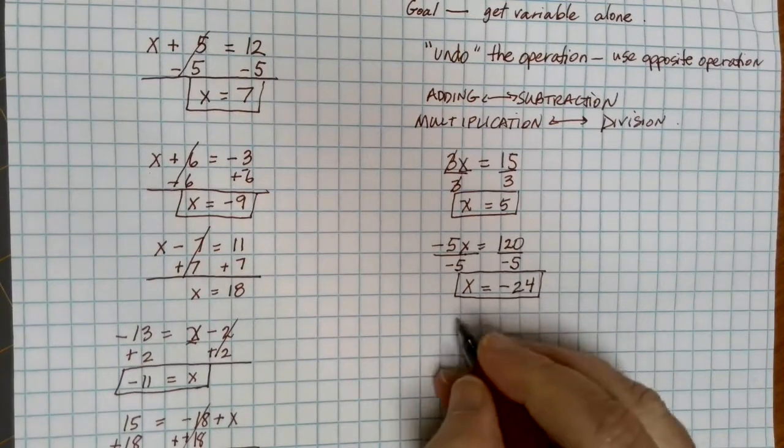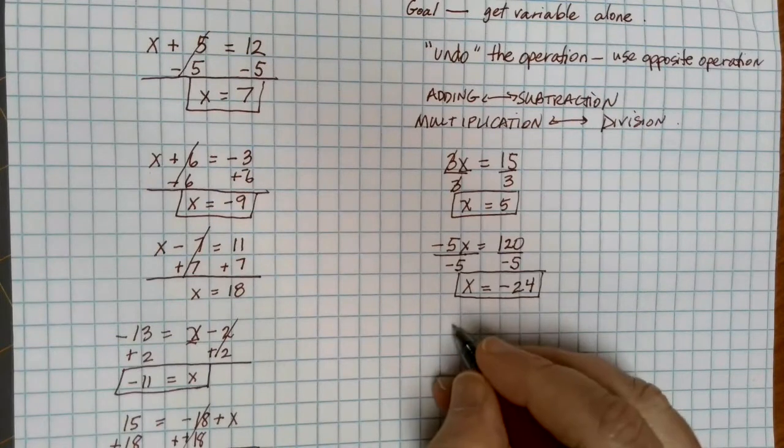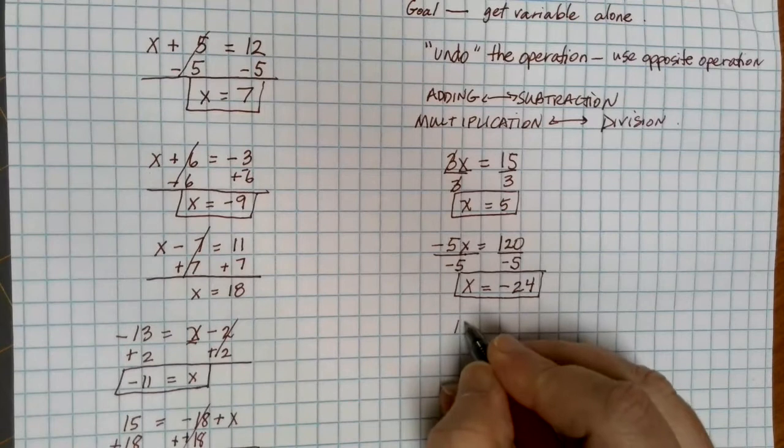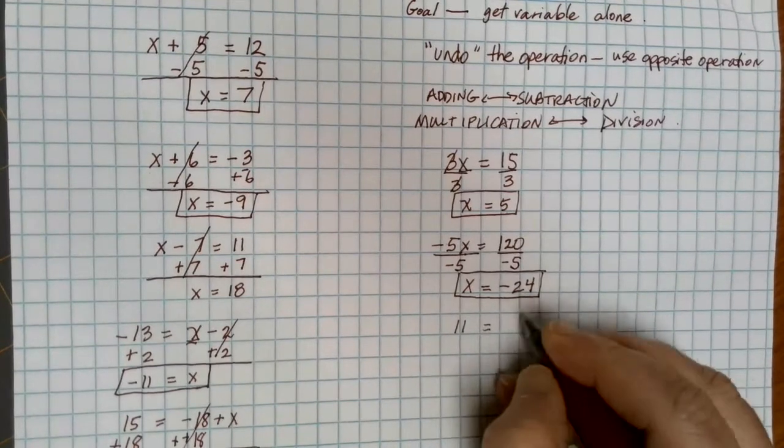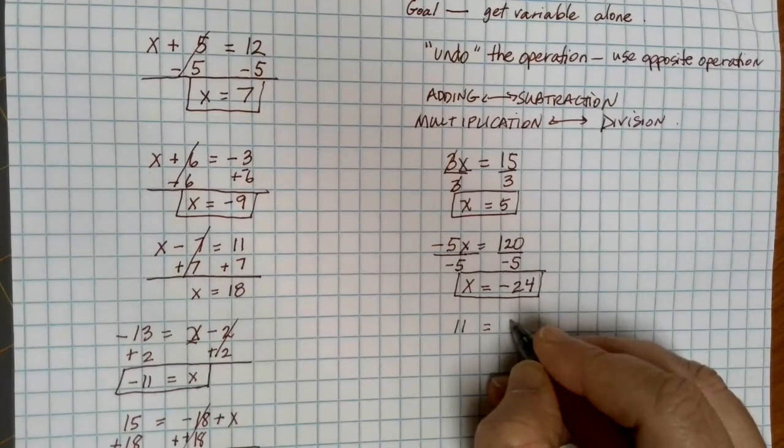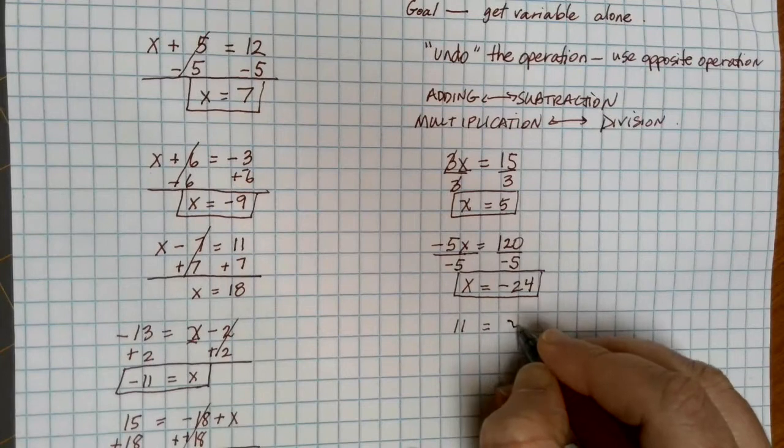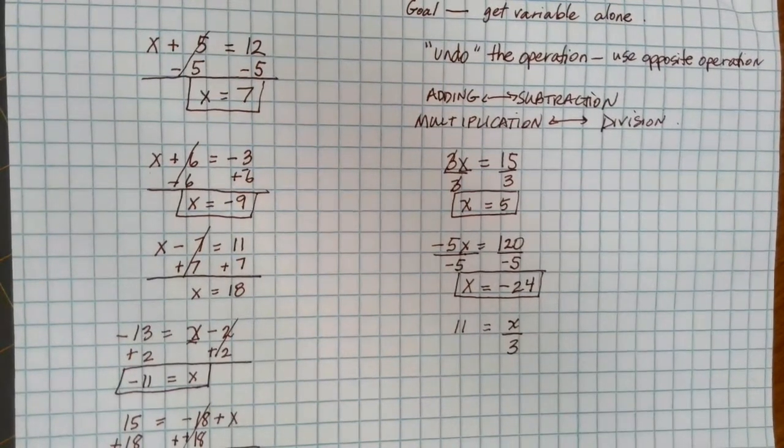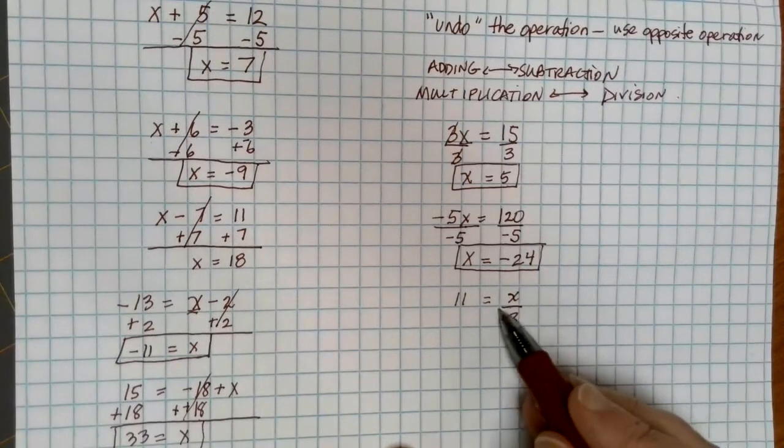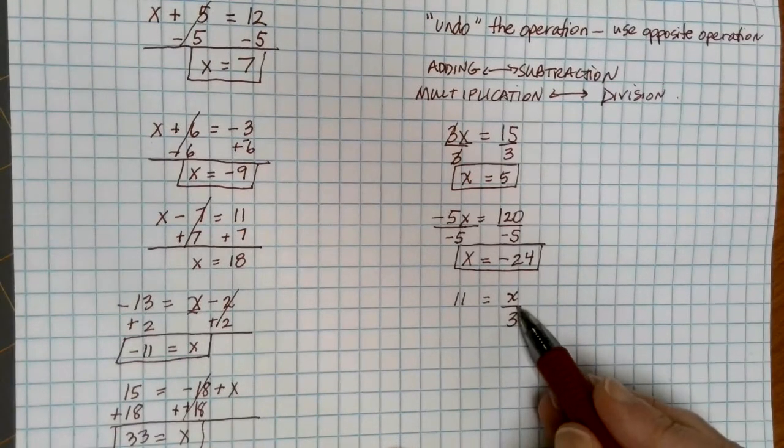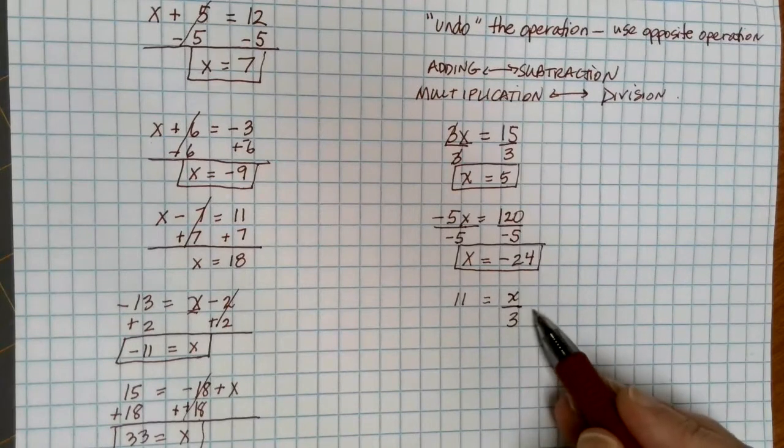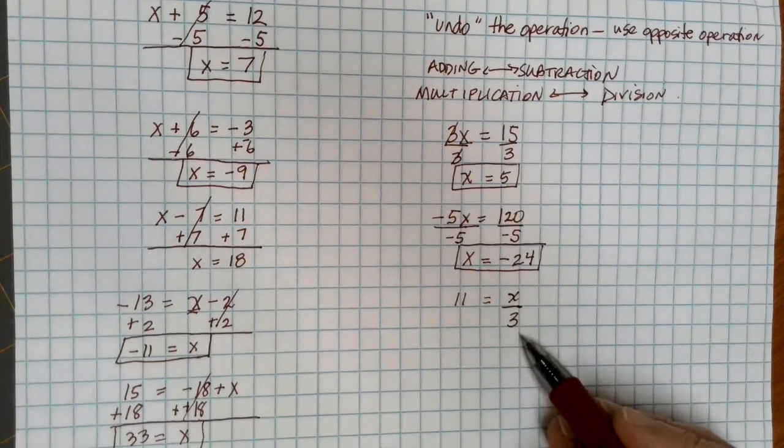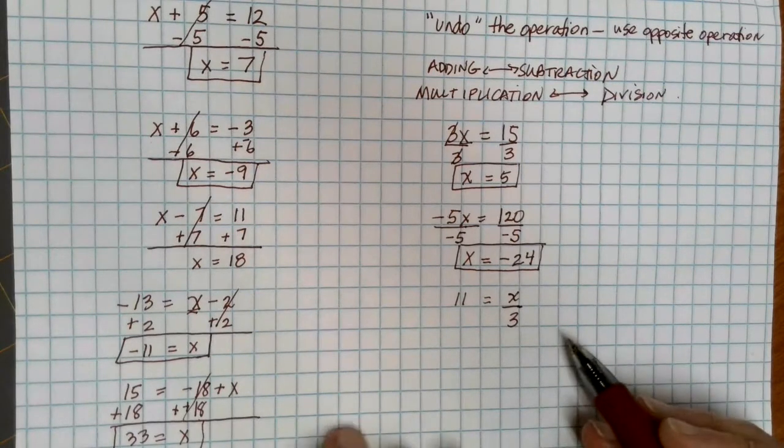Let's consider a problem that looks like this. Let's suppose that we have 11 equals x divided by 3. In this case, notice that, again, I'm using this fraction symbol as my division bar, and that's just another way that we can write things. This is really common to see things written this way when we're dealing with equations.